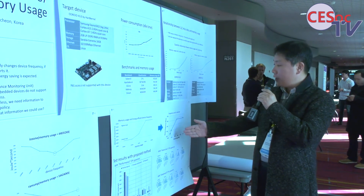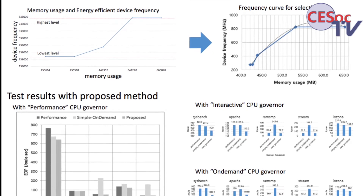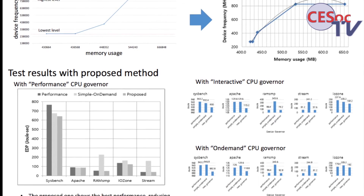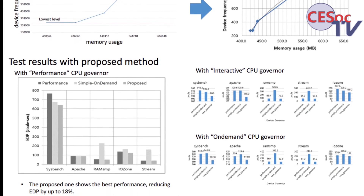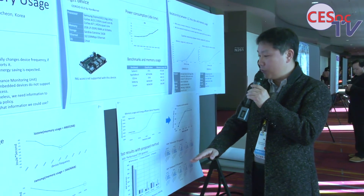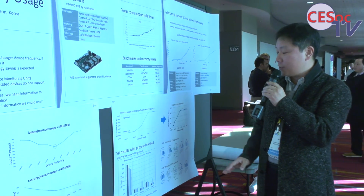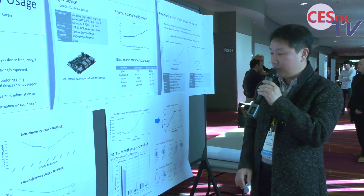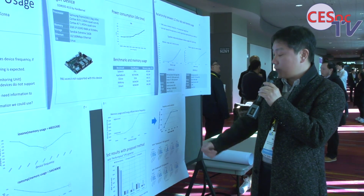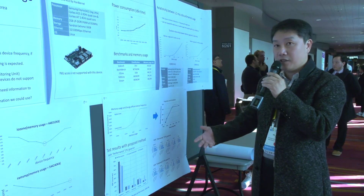We construct a parabolic curve according to the quadratic relationship between memory usage and last level cache misses, and by regression analysis we derive the frequency curve for DRAM frequency selection. For a given memory usage, we can select the DRAM operating frequency. We implemented this policy in the Linux kernel and compared energy efficiency with other policies currently in Linux.